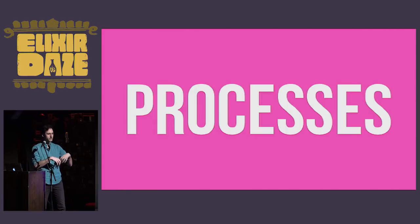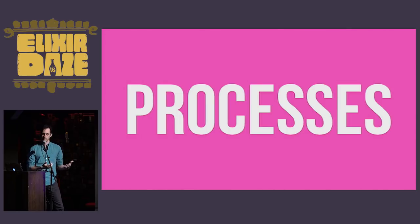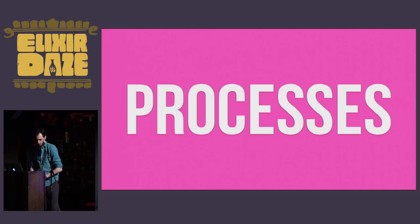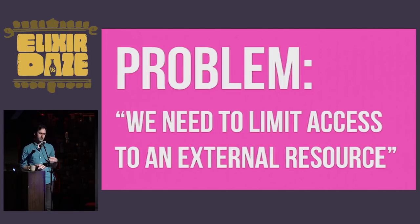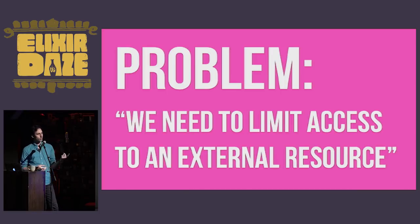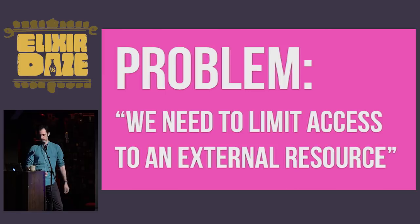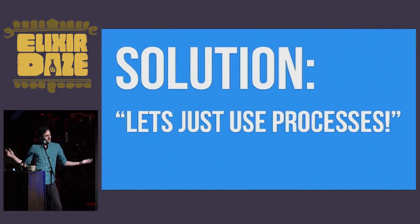I want to peel apart what makes Elixir and Erlang so special by presenting some hypothetical problems we might encounter in daily life. Our first problem: we want to limit access to an external resource — say it's a file on disk or an external service, maybe they're rate limiting us. For whatever reason, we need to limit access to that resource to one reader-writer at any given time. In other words, we need a lock or a mutex. Luckily, we're on the BEAM and the solution is obvious — let's just use processes. Let's throw the state into a process and create our lock.